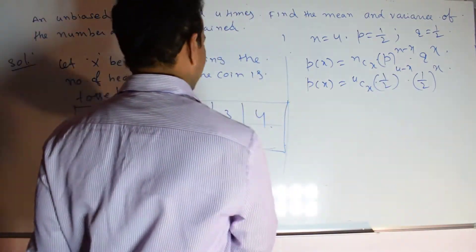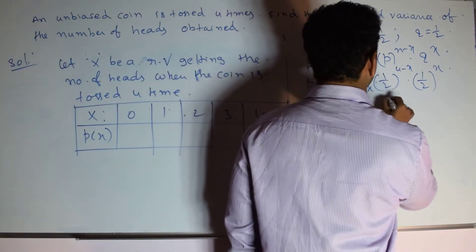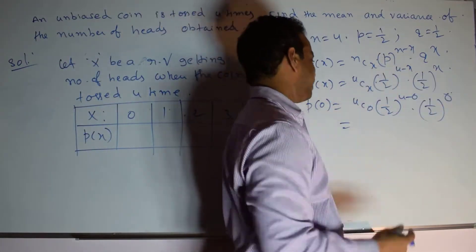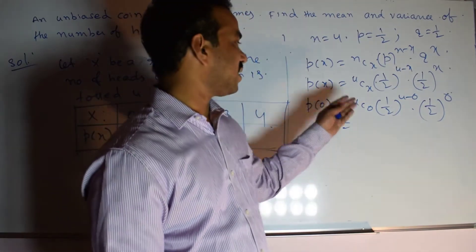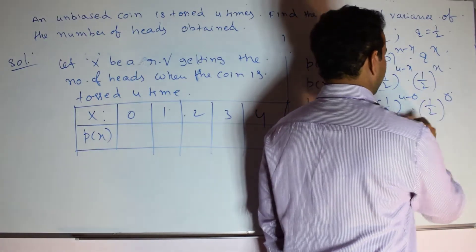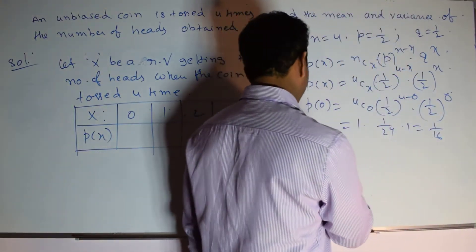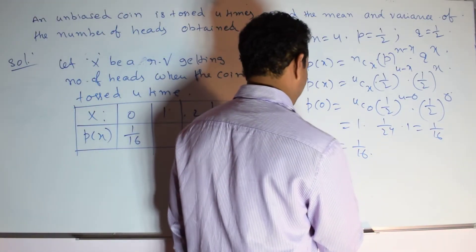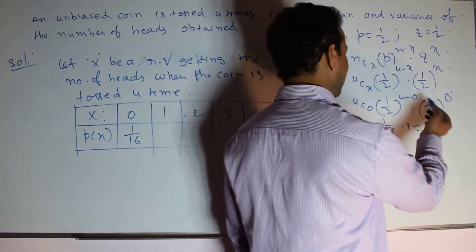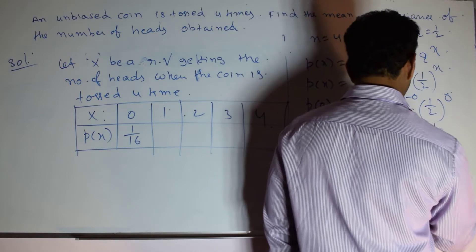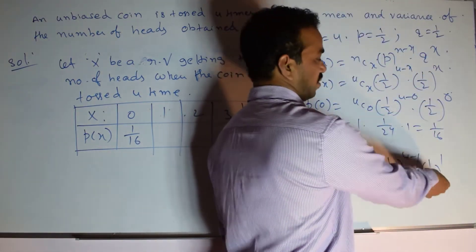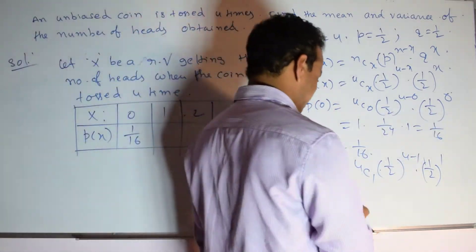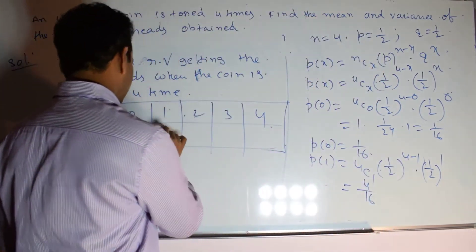First, let me calculate P(0): 4C0 × (1/2)^4 × (1/2)^0. 4C0 = 1, so we get 1 × (1/2)^4 = 1/16. So P(0) = 1/16. Similarly, P(1) = 4C1 × (1/2)^3 × (1/2)^1 = 4 × (1/2)^4 = 4/16. Every time we get 2^4 = 16 in the denominator. So P(1) = 4/16.